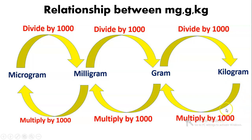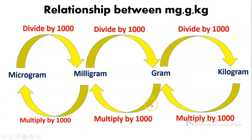If you want to go back from kilogram to gram, you need to multiply by 1000, because 1000 grams make up one kilogram. To convert gram to milligram, multiply gram by 1000. And likewise, to convert milligram to microgram, you multiply milligram by 1000.